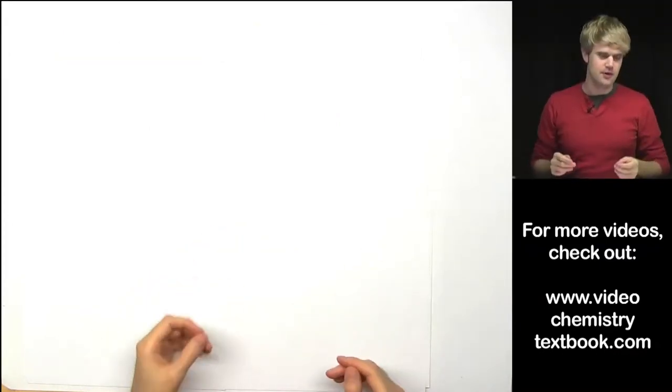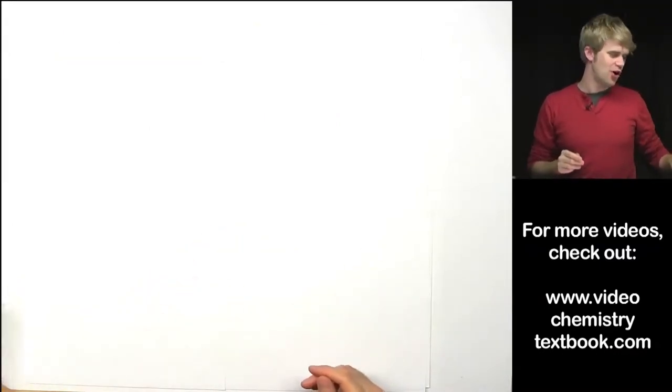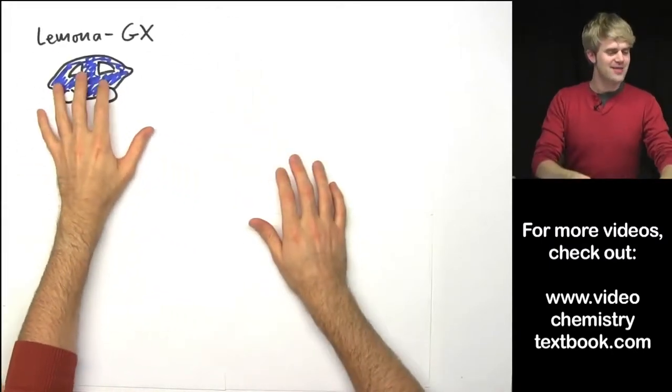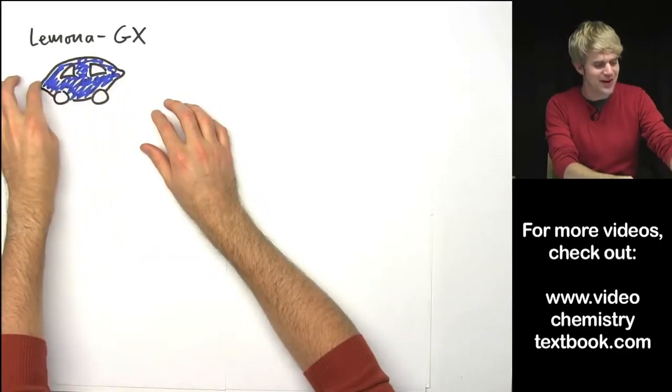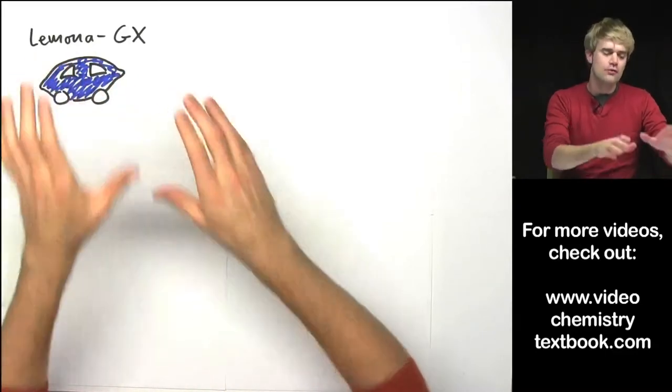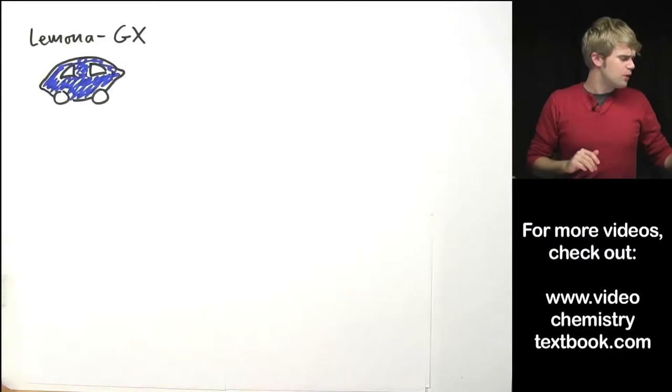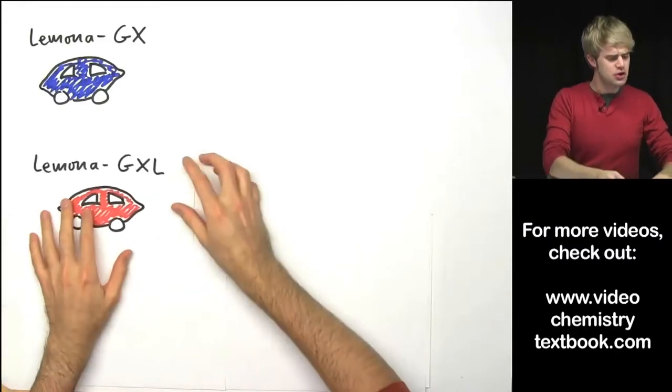So let's imagine that there is a type of car called the Lamona. And the Lamona is called a Lamona because it looks like a lemon. It has this very distinct shape. For the purposes in this video we'll imagine that the Lamona comes in two models.